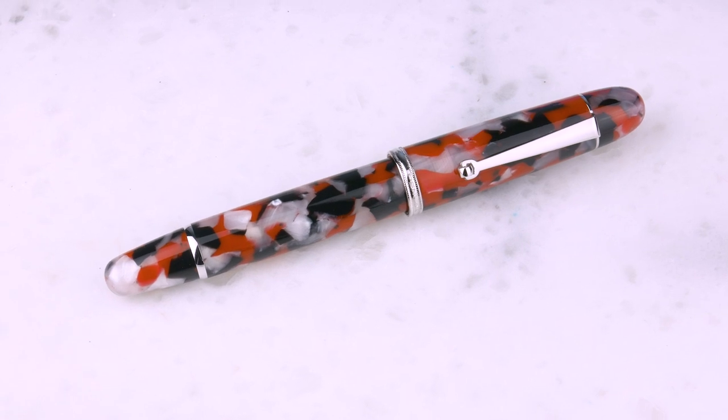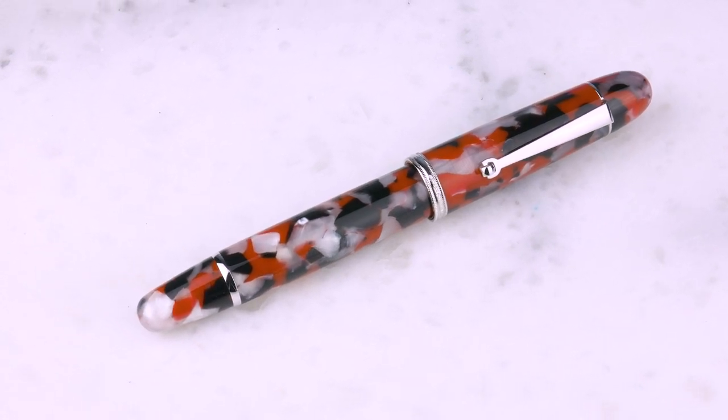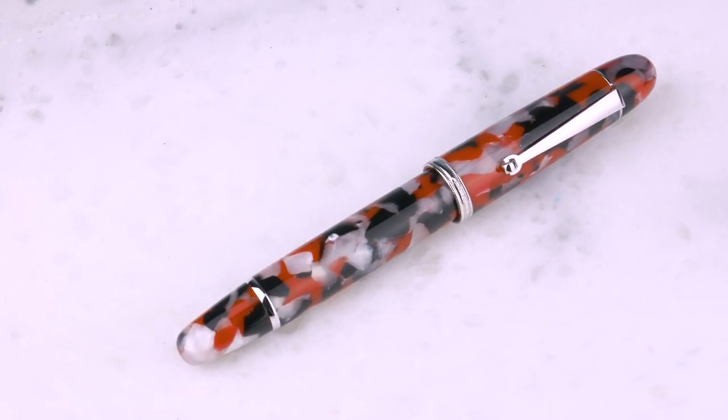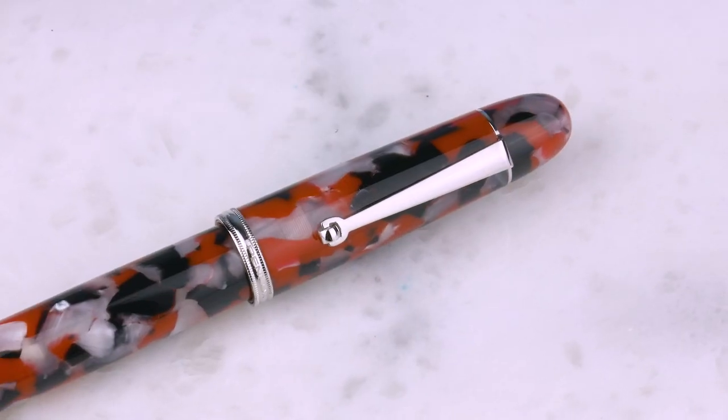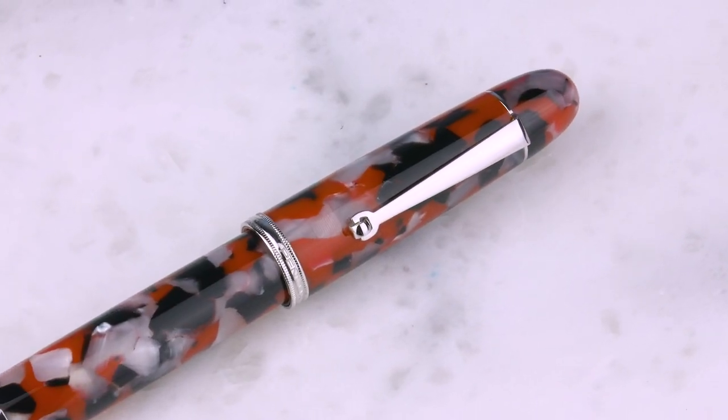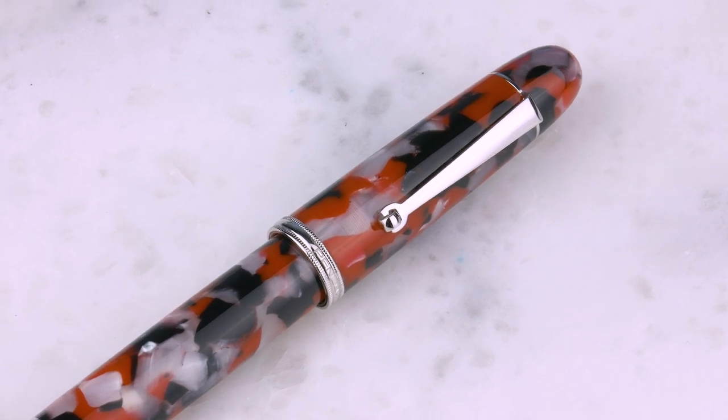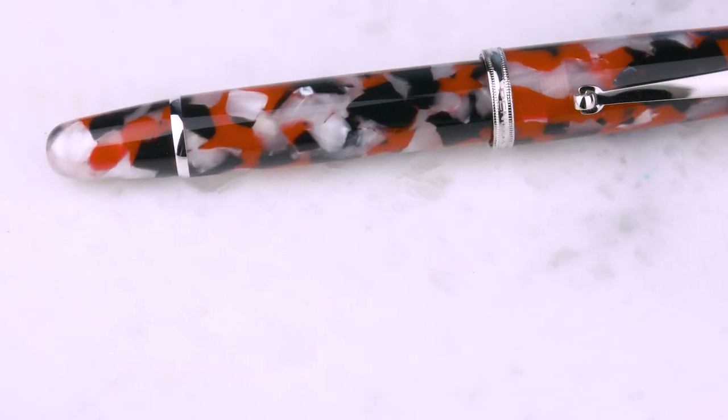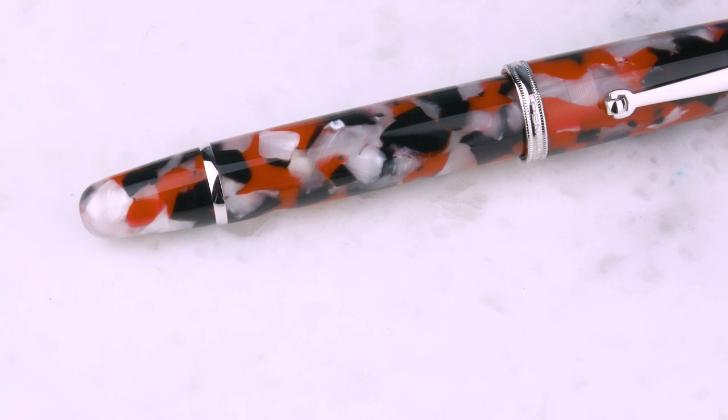This is the Penlux Masterpiece Grande, the Koi in black and red. What do you think of this? I think of all the different Koi patterns, this one really looks the most like a koi. It's very unique. They have the blue, and then the red, and then now there's the red and the black. This is an oversized pen, 149 King of Pen size actually, nice acrylic with a piston fill.